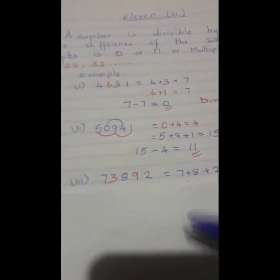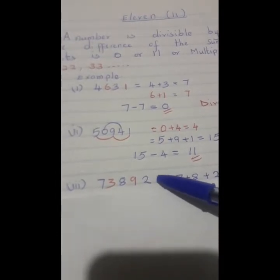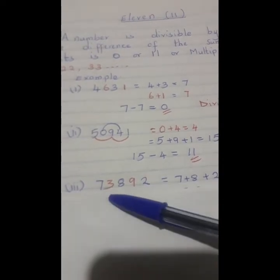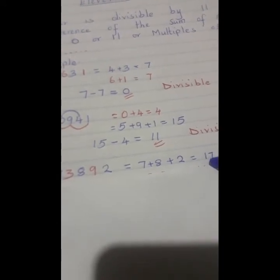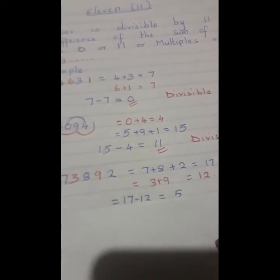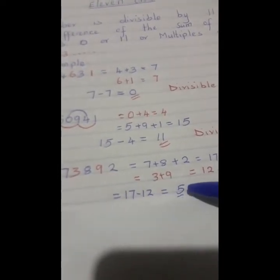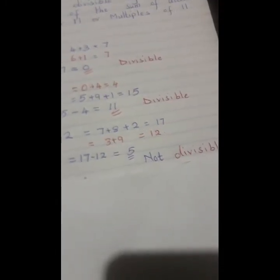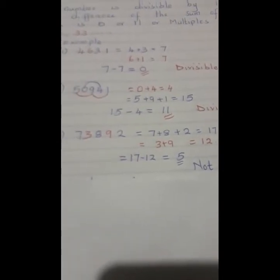The third example there is 73,892. The alternate numbers are 7, 8, and 2, and then 3 and 9. When we add 7, 8, and 2 we shall get 17, and when we add 3 and 9 we shall get 12. The difference is 5. 5 is not divisible by 11, so this number is not divisible by 11.